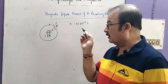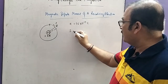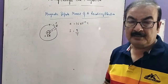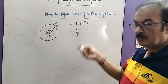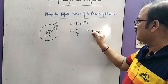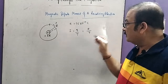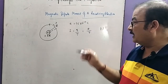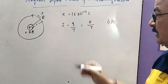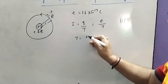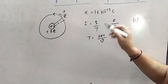When the electron is moving, in every revolution it constitutes a current. The current produced is I = charge/time period = e/T. The time period of revolution is T = 2πr/v. Substituting, we get current I = e·v/(2πr). This is equation 1 and equation 2 combined.